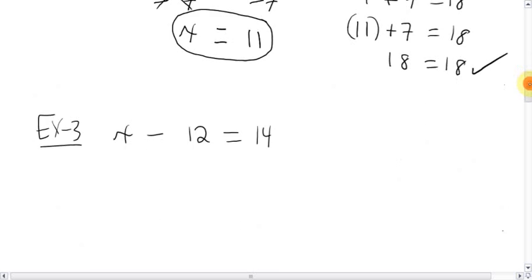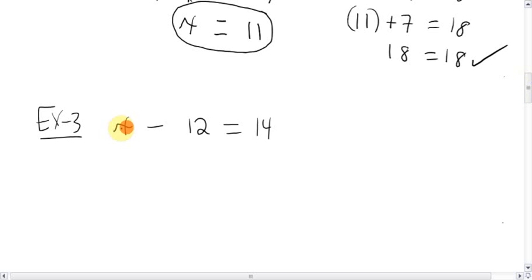Next, x minus 12 equals 14. This time, what's being done to the letter is that it's being subtracted by 12. Well, the opposite of subtracting by 12 is adding by 12. Do the same to the other side. Adding 12. This will cancel out. You're left with just x on the left-hand side. And then 14 plus 12 on the right-hand side is 26.